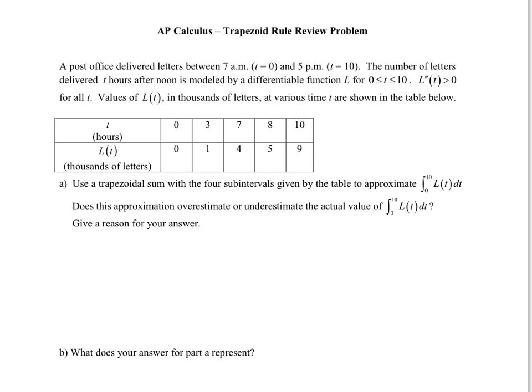It says the post office delivered letters between 7 a.m., we're going to call that t equals 0, and 5 p.m., let's call that t equals 10. The number of letters delivered t hours after noon is modeled by this differentiable function L, 0 less than or equal to t less than or equal to 10. L double prime of t is greater than 0 for all t.